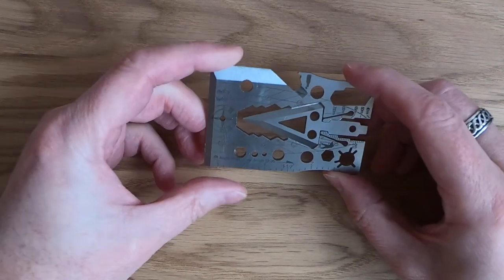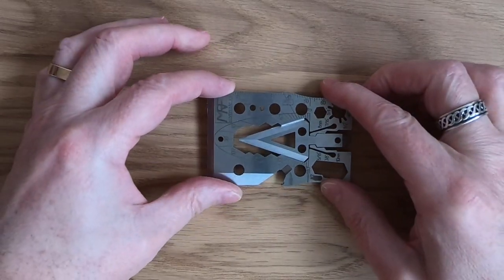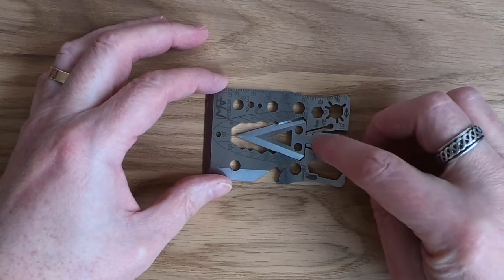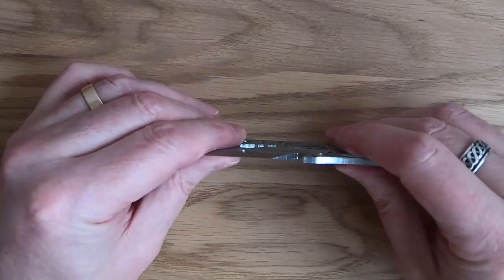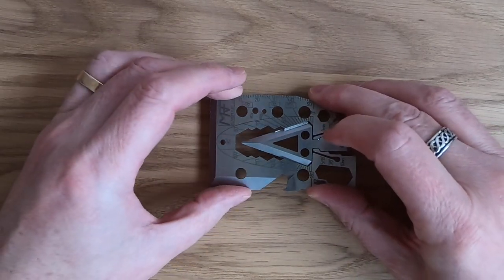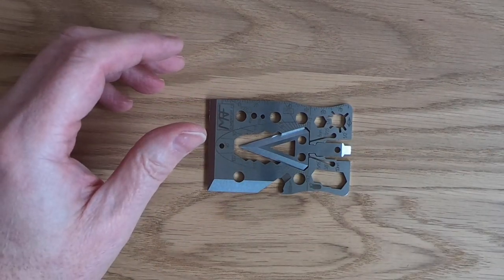This is basically their Adventure 3.0 outdoor survival bushcraft multi-tool. I guarantee you're going to be buying one of these by the end of the review. It comes with this card which is nice and thick and sturdy. This one's made of stainless steel, but you can get them in titanium as well in different colors. This can also be bought in conjunction with a handle.